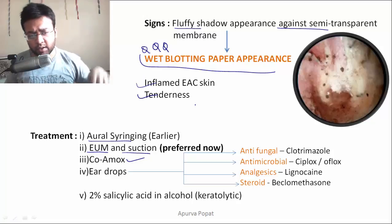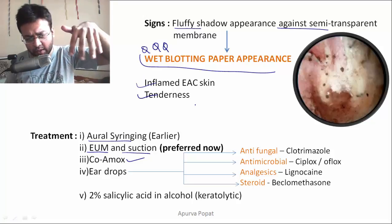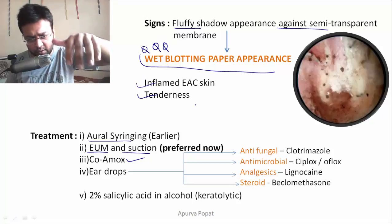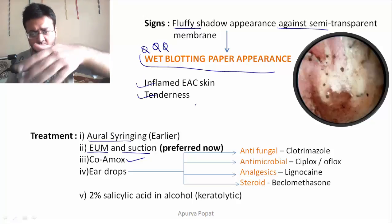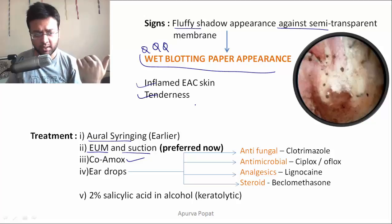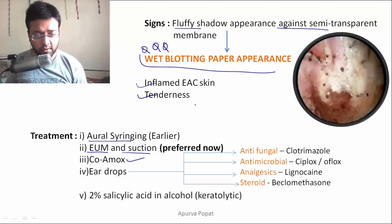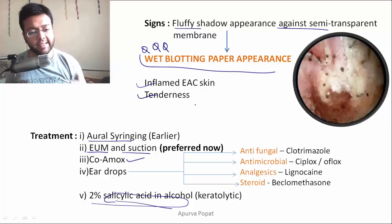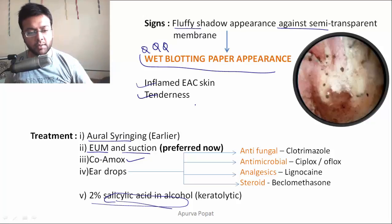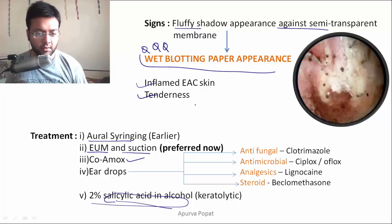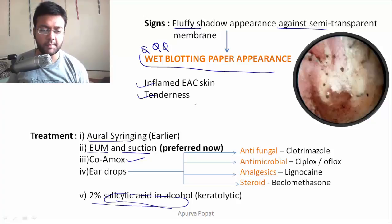Since the fungal hyphae invade the epithelium, it is also important to remove the superficial epithelium by giving a keratolytic agent like 2% salicylic acid in alcohol. Salicylic acid is also acidic in nature, which helps bring down the pH of the external auditory canal.